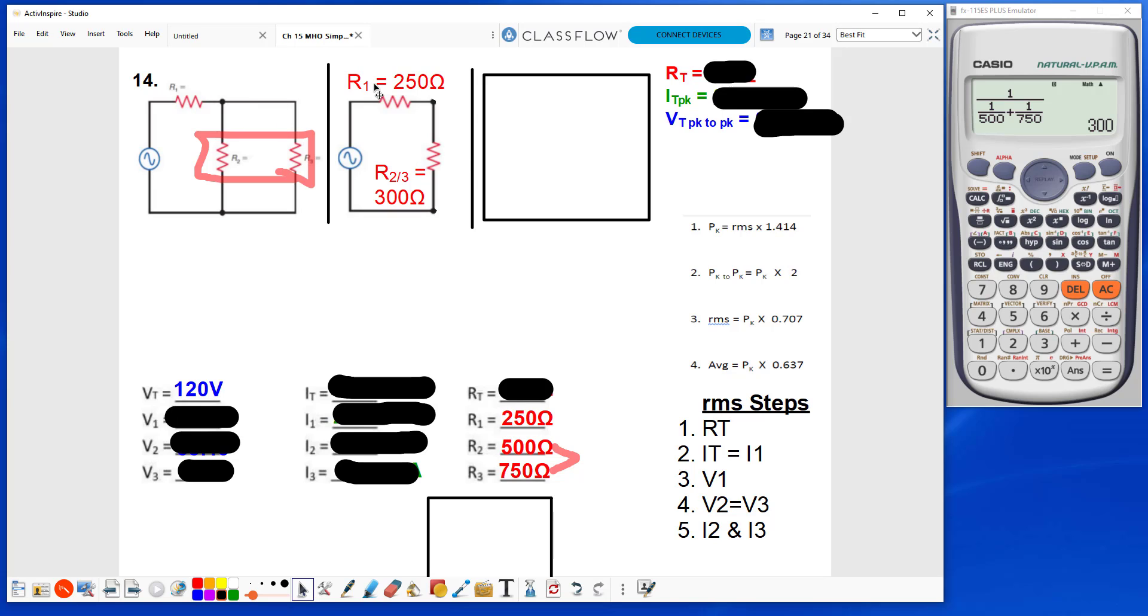So, I bring the R1 value of 250 ohms over, I have my R23 value of 300 ohms, that gives me 2 in series. I combine these two, gives me a total resistance of 550 ohms.